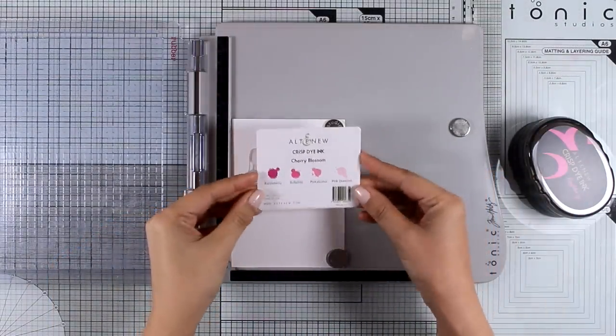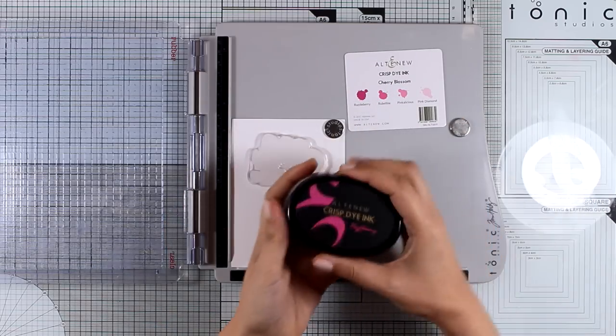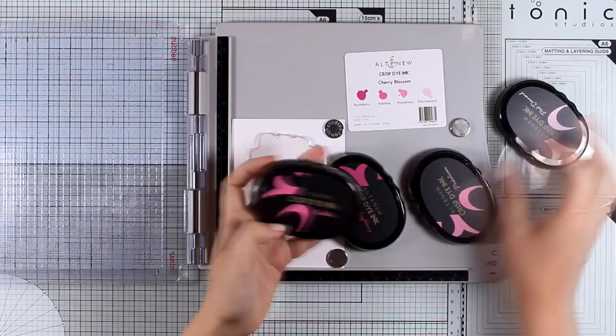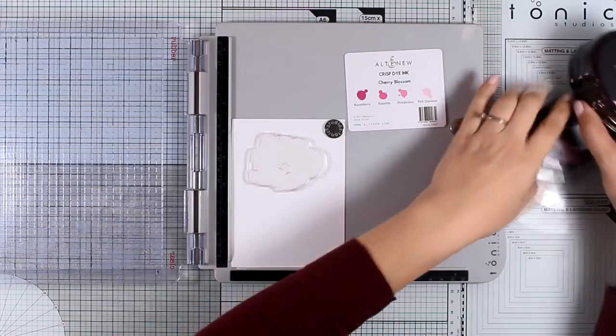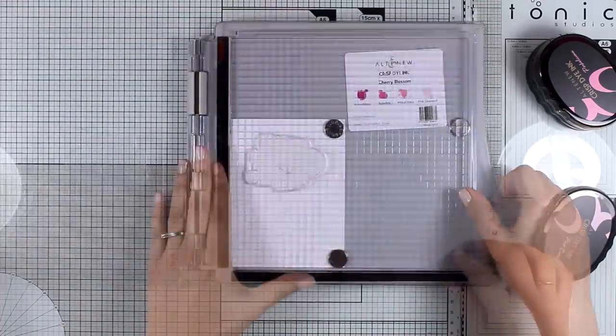I'm playing today with the Hope stamp set and I will stamp this flower. There are actually four different layers of this flower and I'm going to use four different ink pads for that. These are actually from a set, the oval sets and that's called Cherry Blossom, beautiful inks in this set.